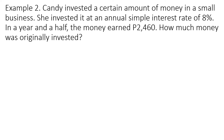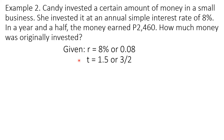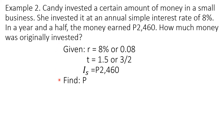In the next problem, the given are: the simple interest rate R, which is 8%, or 0.08 in decimals — it is important to change the rate into decimals. The time must be expressed in number of years; since it is a year and a half, that is 1.5 years, or 3 over 2 years. The value of the simple interest is 2,460 pesos, and we are asked to solve for the value of P — how much money was originally invested.